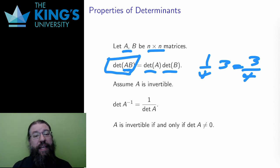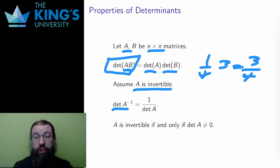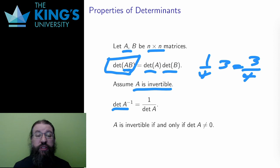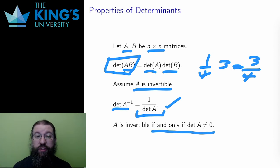Now assume that A is invertible. What is the determinant of the inverse? If A doubles area, then A inverse should multiply area by a half, since doing A and then its inverse should get back to where we started. Since the effect on area is multiplicative, the inverse should have the reciprocal effect. And indeed it does — the determinant of the inverse is the reciprocal of the original determinant.